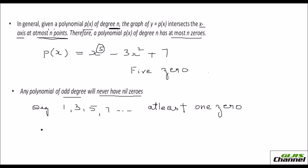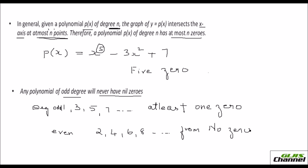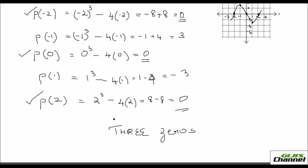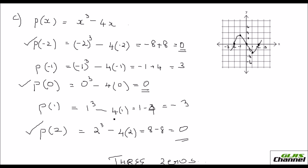But when the degree is even — like 2, 4, 6, 8 — you can have from no zeros up to that many zeros, depending upon the degree. I hope you understood the meaning of zeros and how it is applied in a polynomial.